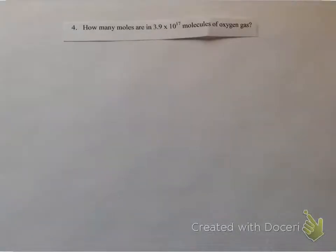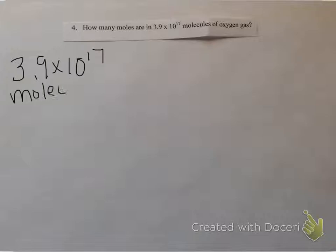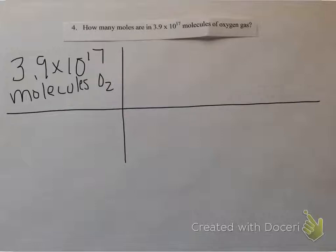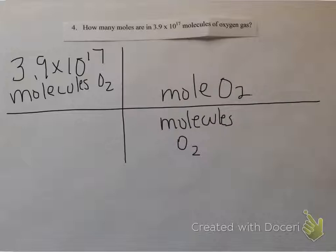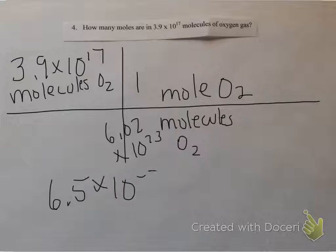For the next problem, if you feel comfortable, try to set it up yourself and then check your answer. You should have molecules on the bottom and mole on top. If you have mole, you're going to use 1. If you have molecules, you're going to use 6.02 times 10 to the 23rd. Multiply the top and divide by the bottom using scientific notation rules. When you calculate this, you should get 6.5 times 10 to the negative 7 moles of oxygen, because the molecules cancel out.